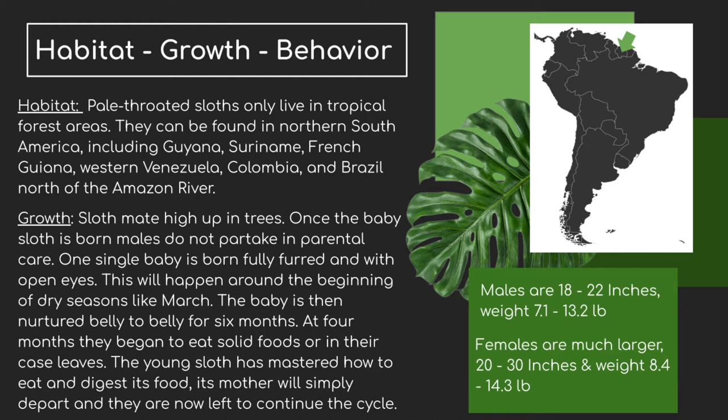Now that we have a little bit of understanding of their habitat, we're going to go into their growth. Sloths do everything up high in the trees — they sleep, eat, and also mate there. The sloths mate high up in the trees, and once the baby is born, males do not partake in parental care, so it's all up to the mom. Once the baby is born, they are fully fertile already and with open eyes. This will happen around the beginning of dry seasons, like March or April. The baby is nurtured belly to belly for six months, so the mom will feed it.